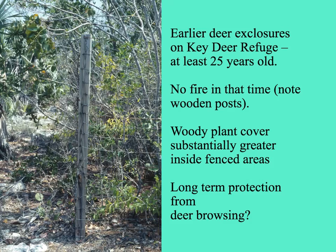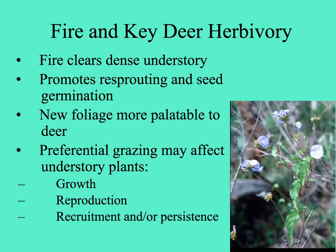In the Keys, some areas had wooden exclosures that protected vegetation from key deer browsing for 25 to 30 years, and you can see on the right side of the post, protected from deer, far more greenery than on the open-grazing left side. With fires, the dense understory is cleared and resprouting and seed germination are encouraged, producing a flush of new, tender, palatable foliage for deer. We conducted a study comparing growth, reproduction, and presence or absence of species to assess whether preferential grazing by key deer could affect understory plant composition.